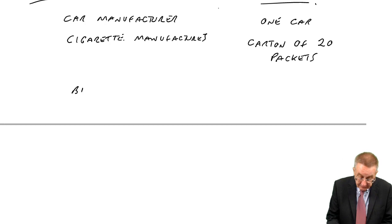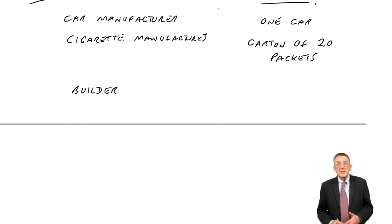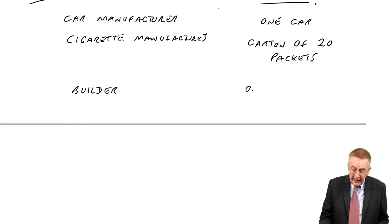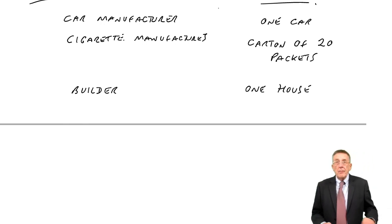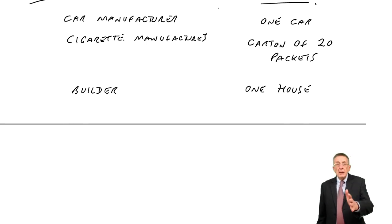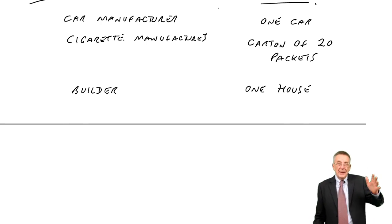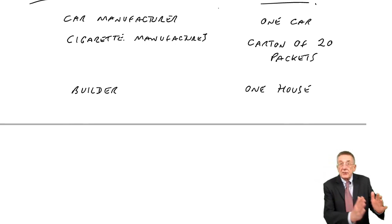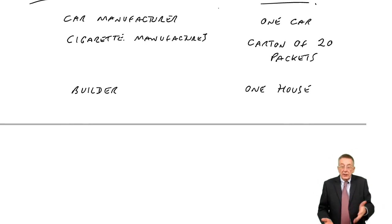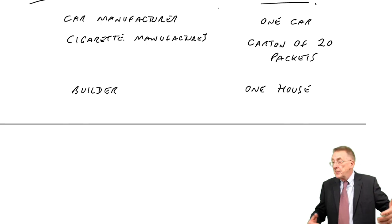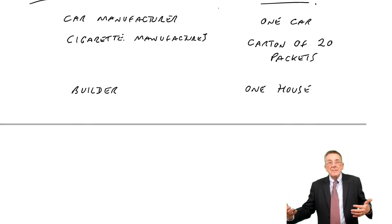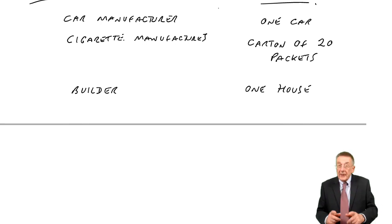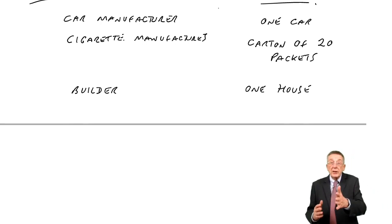What about the next one — a builder? A builder building houses: the obvious cost unit is one house. But there is one difference from the car manufacturer. A car manufacturer might be selling thousands of the same identical car, so you only need to know the cost of one of those and you've got the cost of all of them. But a builder is likely to be building all sorts of different houses — some might have two rooms, some might have five rooms. So the builder is likely to have to cost each house separately.